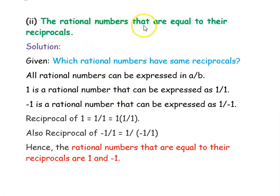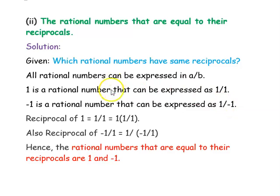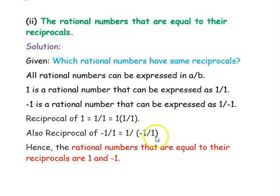The next question is: find the rational numbers that are equal to their reciprocal. All rational numbers can be expressed as a/b, and their reciprocals are b/a. We need to find a number such that a/b equals b/a. The number 1 can be expressed as 1/1, whose reciprocal is also 1. Similarly, -1 can be expressed as 1/(-1), which is also equal to -1. So 1 and -1 are the rational numbers equal to their own reciprocals.